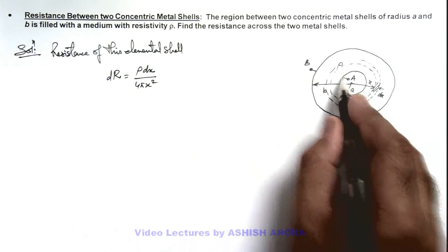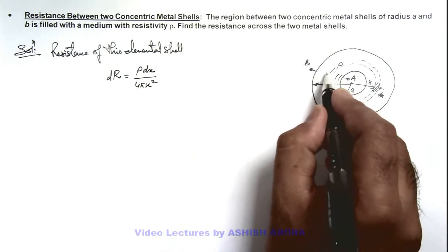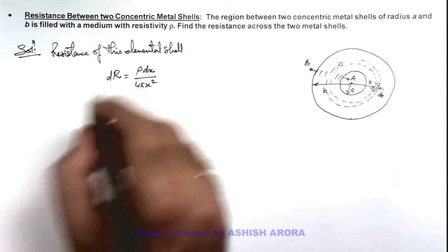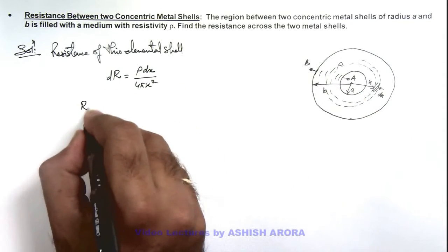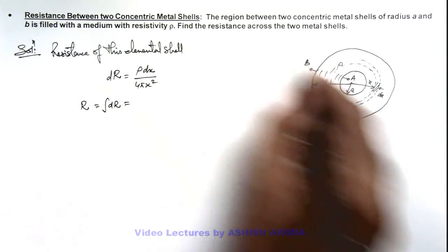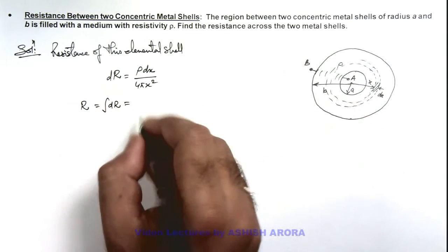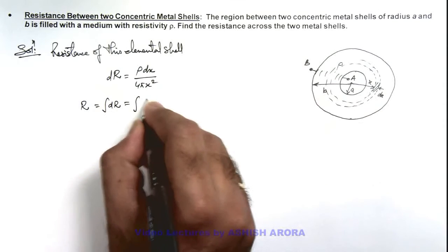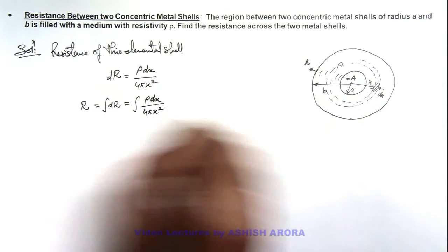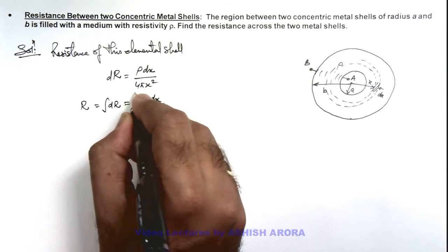And between shells a and b all such dR's are taken to be in series combination. So here we can write the resistance across the two shells is integration of this dR as all series resistances are added up. So this can be written as integration of ρ dx by 4π x² which is integrated within limits of x from a to b.